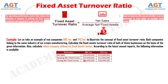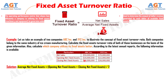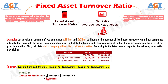Now let's move in to solve this problem. The average net fixed assets is calculated using the formula: Average Net Fixed Assets = (Opening Net Fixed Assets + Closing Net Fixed Assets) / 2. For company ABC, average net fixed assets equals opening net fixed assets of $20 million plus closing net fixed assets of $24 million divided by 2, which gives an average net fixed assets of $22 million.